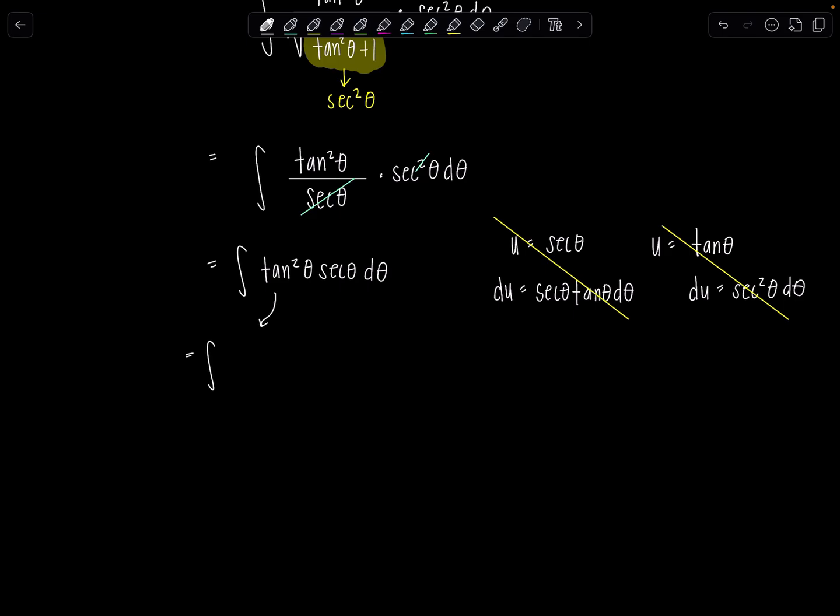So tan squared theta I can replace with secant squared theta minus one. And then we still have this secant theta, d theta. And then now let me go ahead and distribute secant theta throughout. So then we'll have integral secant cubed theta minus secant theta, d theta.